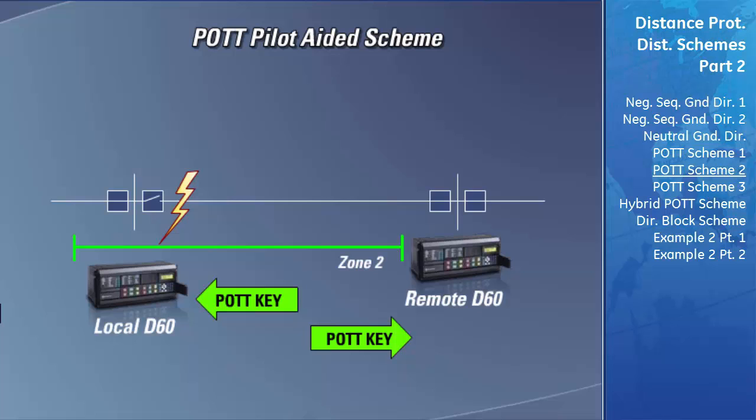The remote relay will then take this echoed POTT key and immediately trip its breaker. If the echo function is going to be used, the line pickup protection element must first be configured. The description of the line pickup function will be covered later in the course.